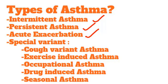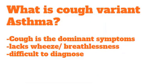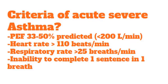Acute exacerbation is loss of control of any type or variant of asthma. The special variants of asthma include cough variant asthma, exercise-induced asthma, occupational asthma, drug-induced asthma, and seasonal asthma. In cough variant asthma, cough is the dominant symptom and it lacks wheeze and breathlessness, making diagnosis tough. That is why it is called cough variant asthma.